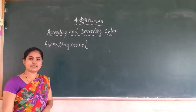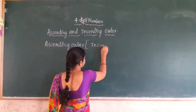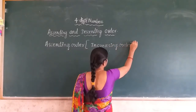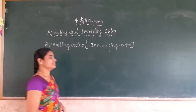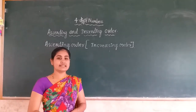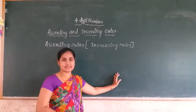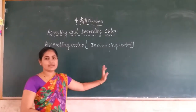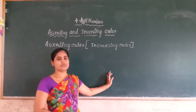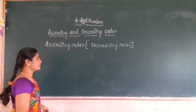Ascending order — another name is increasing order of the numbers. Ascending order means increasing order. What is the meaning of ascending order or increasing order? Ascending order means arrangement of numbers from the smallest number to the biggest number. We call it as ascending order or increasing order of the numbers.